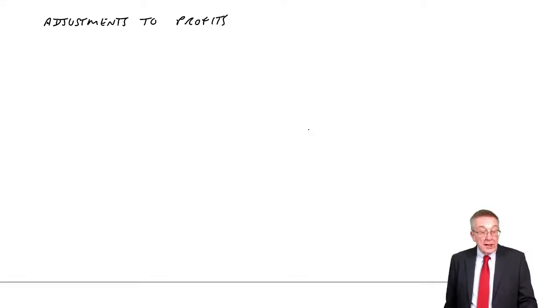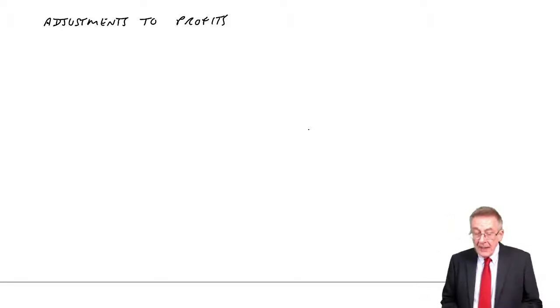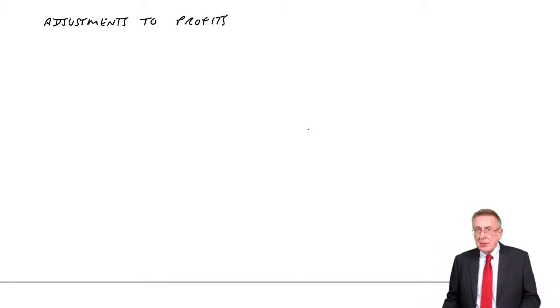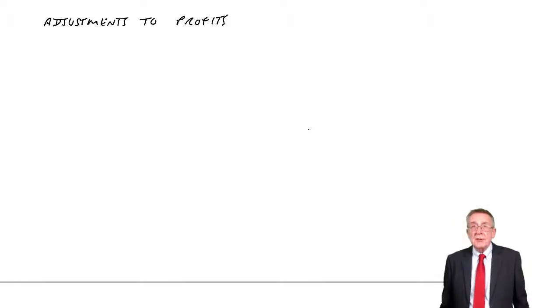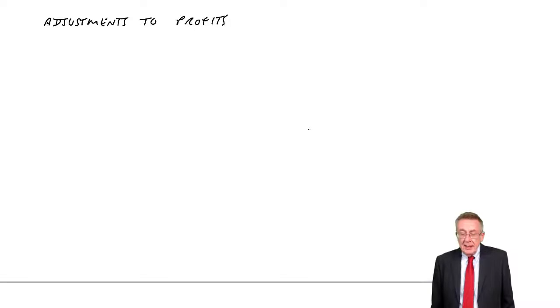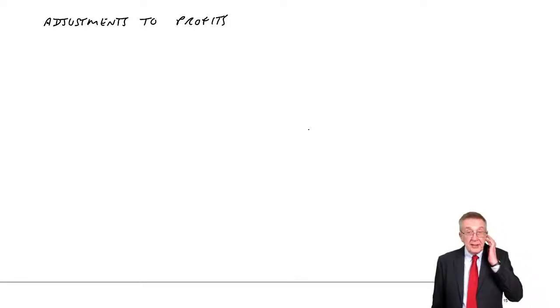We're going to look now at the chapter on adjustments to profit and suspense accounts. These are actually two separate problems, so I'll have two separate lectures. This one is just on adjustments to profit, but I've put them in the same chapter because both involve effectively correcting errors. Anyway, the first lecture will be just on adjustments to profit.